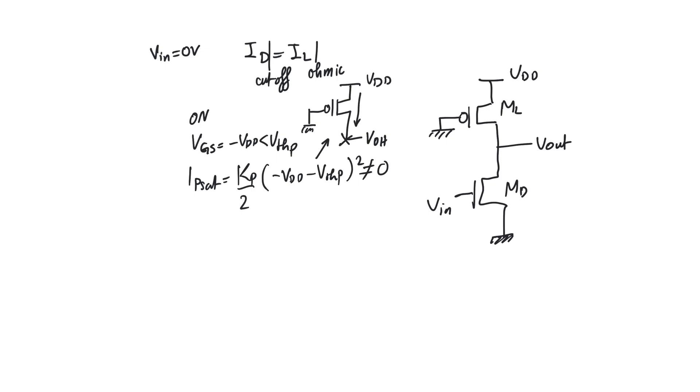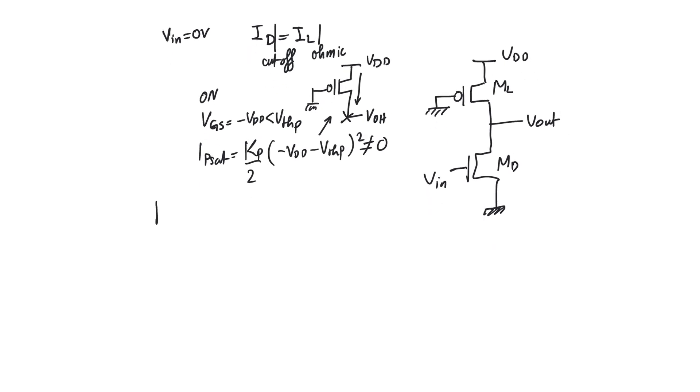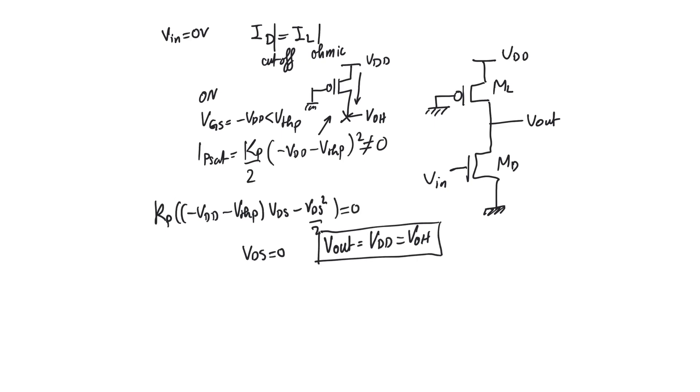So it has to be ohmic and the ohmic current Kp into VGS minus V threshold P. Recall that V threshold P is a negative number into VDS minus VDS square over 2 is equal to zero. This is solved by VDS equals zero, which causes V output to be equal to VDD. And this is V output high. So congratulations, we have V output high equal to VDD. So this is what we wanted and we got it.